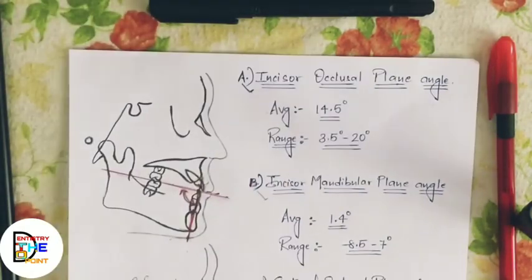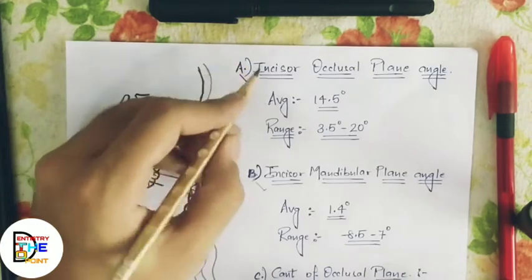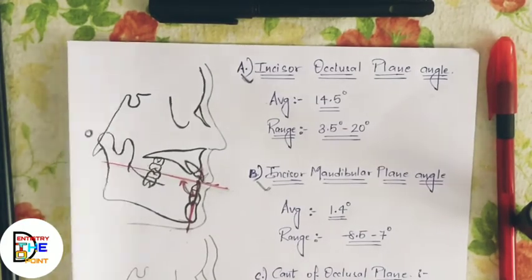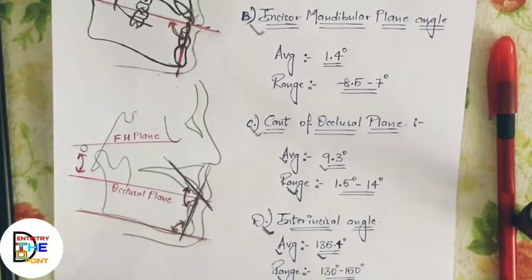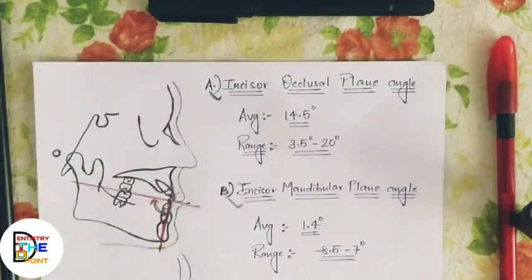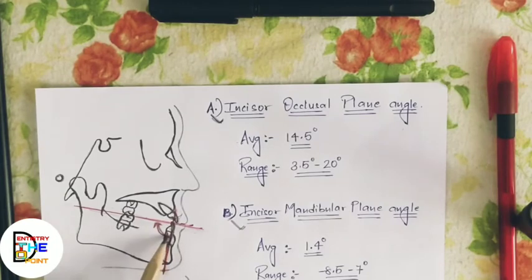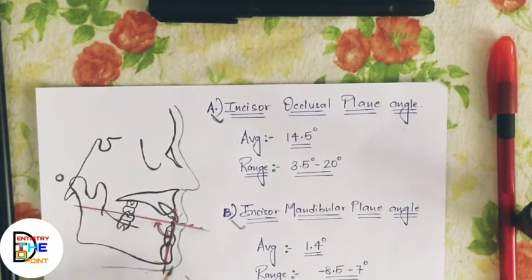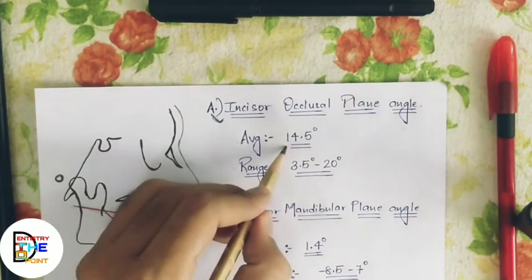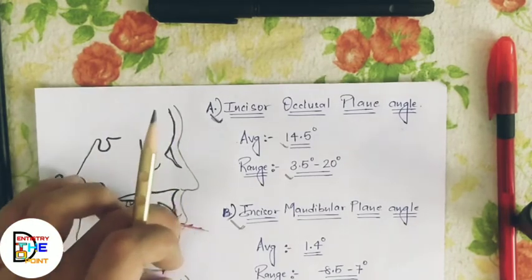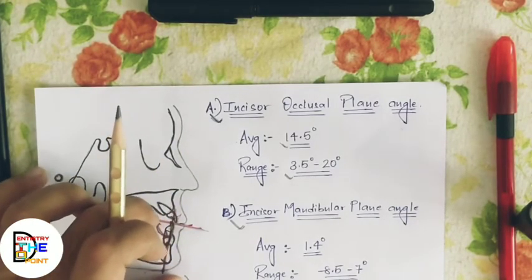Now we move to the five dental parameters: incisor occlusal plane angle, incisor mandibular plane angle, cant of occlusion, inter-incisal angle, and upper incisor to A-Pog line. The first dental parameter is the incisor occlusal plane angle — formed by the long axis of the lower incisor as the first line and the occlusal plane as the second line. If this angle is increased, the incisors are retroclined.